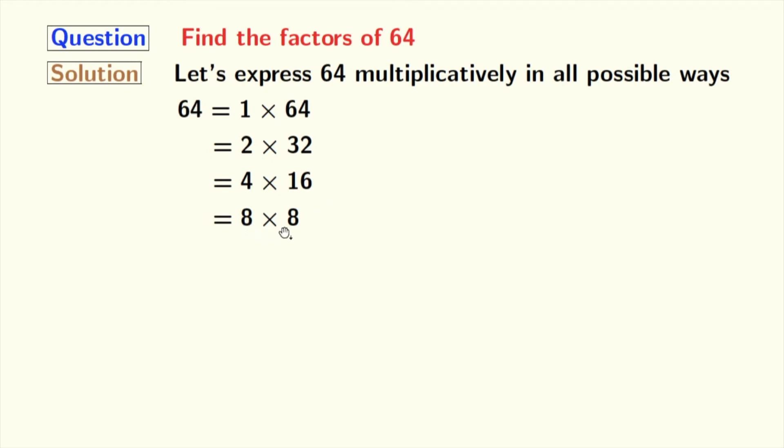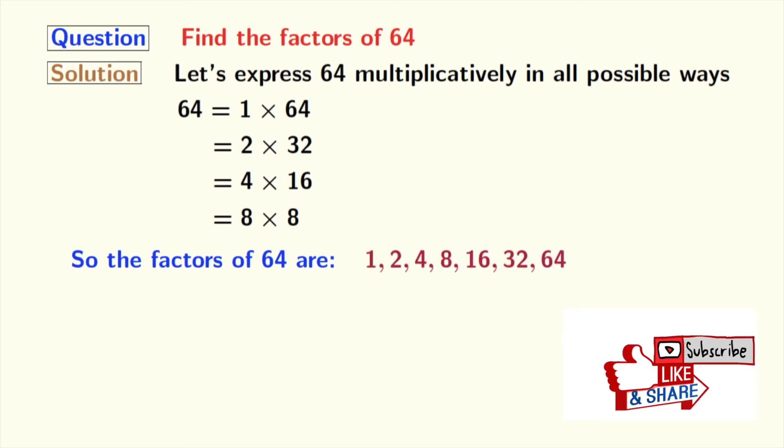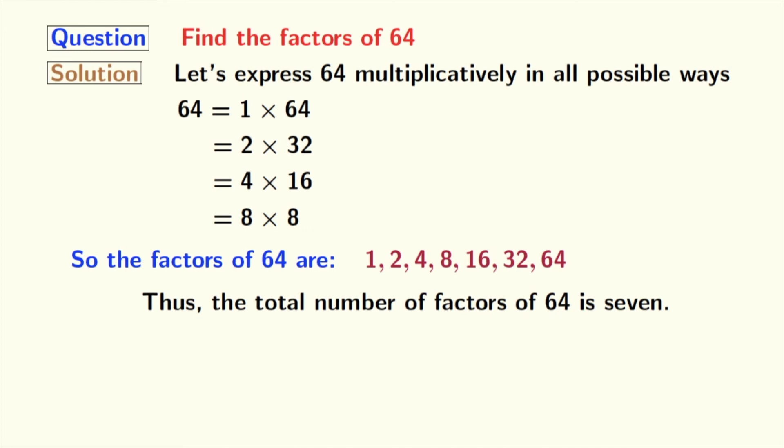Now, between 8 and 8, there is no number which can divide 64, so we will stop right now. Here are the factors of 64: 1, 2, 4, 8, 16, 32, and 64. Therefore, the total number of factors of 64 is 7.